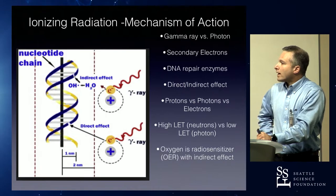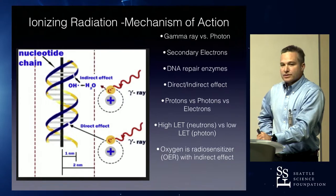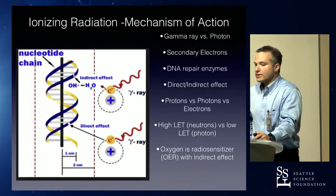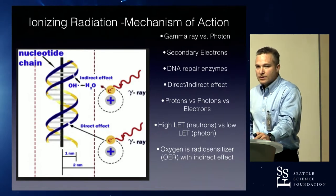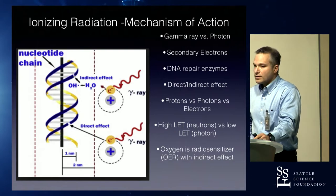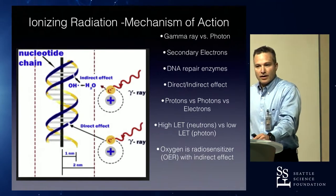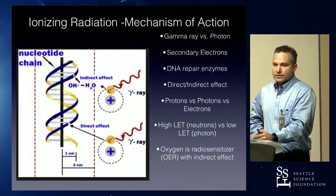You can repair the indirect effect, but you can't really repair the direct effect damage because it's a double-strand break. Oxygen is a radiosensitizer — the more free radicals you create, the more damage is done. Tumor cells that are hypoxic tend not to respond as well to radiation, which is one reason why, when treating somebody who's anemic, we often transfuse them to get their hematocrit above 30.